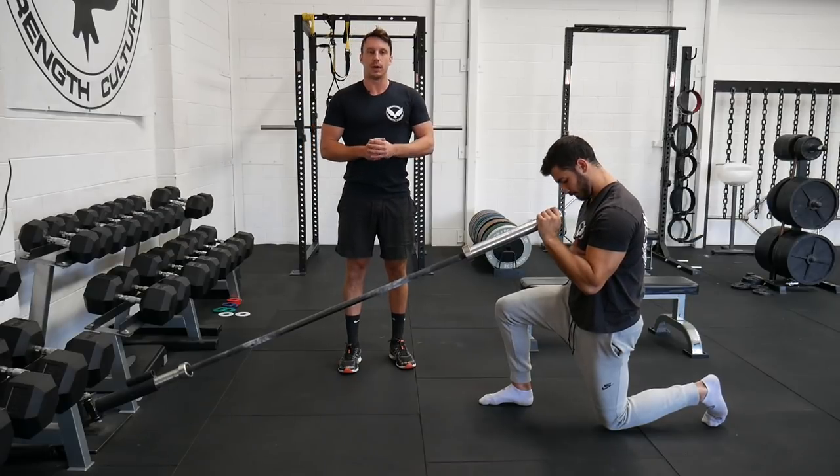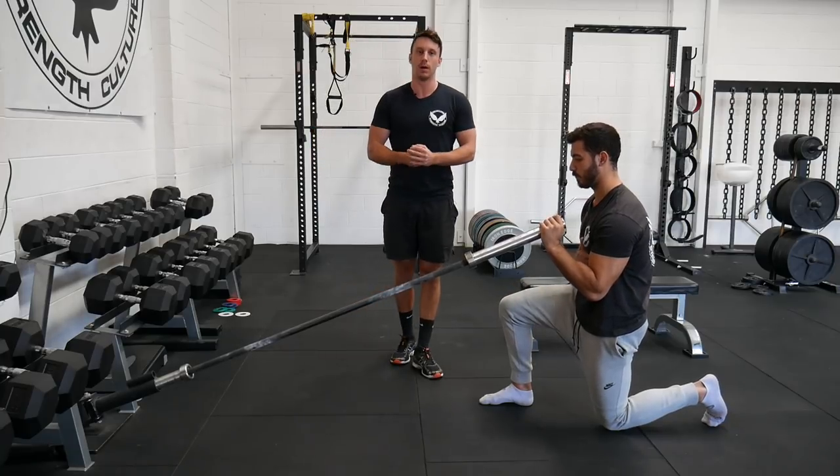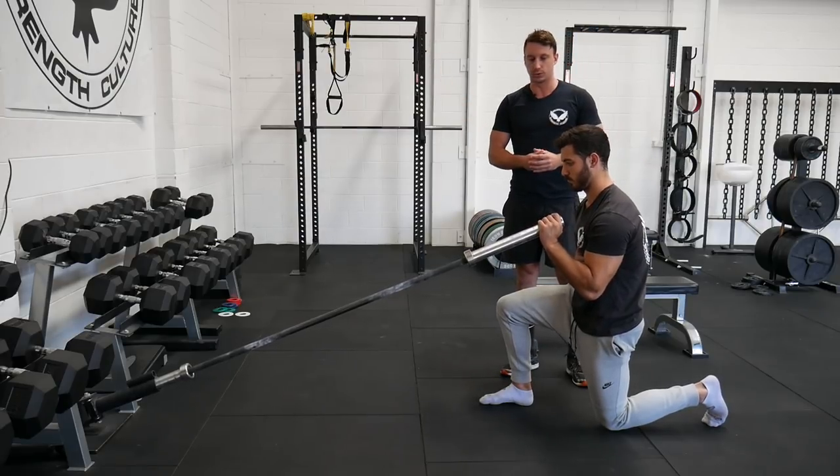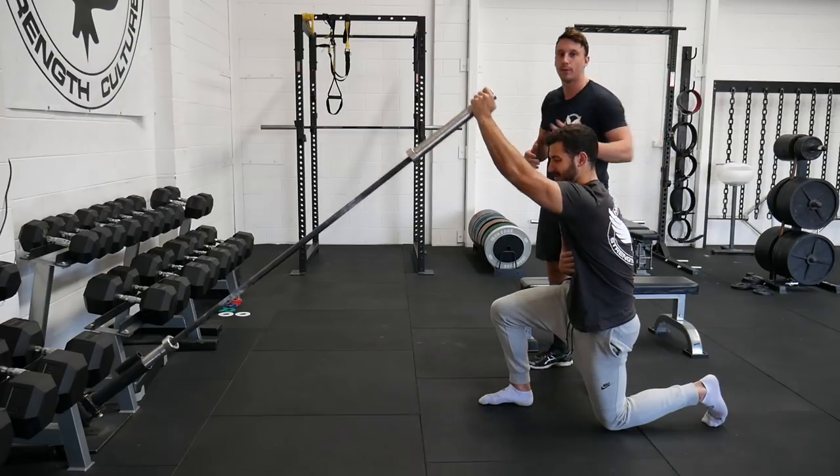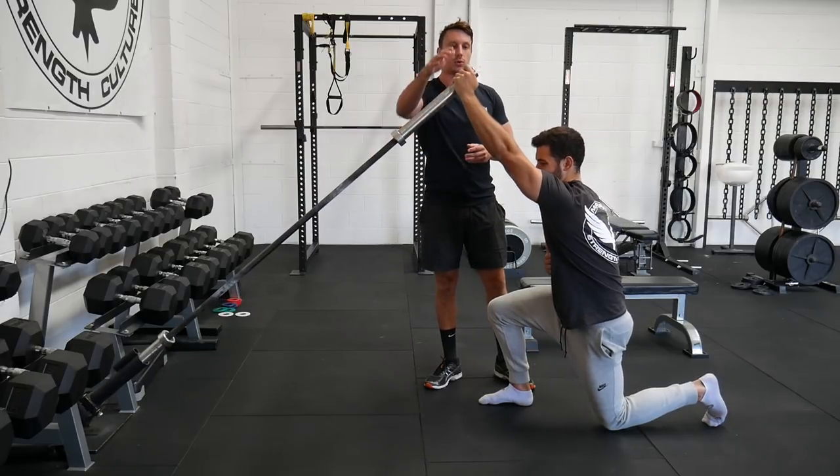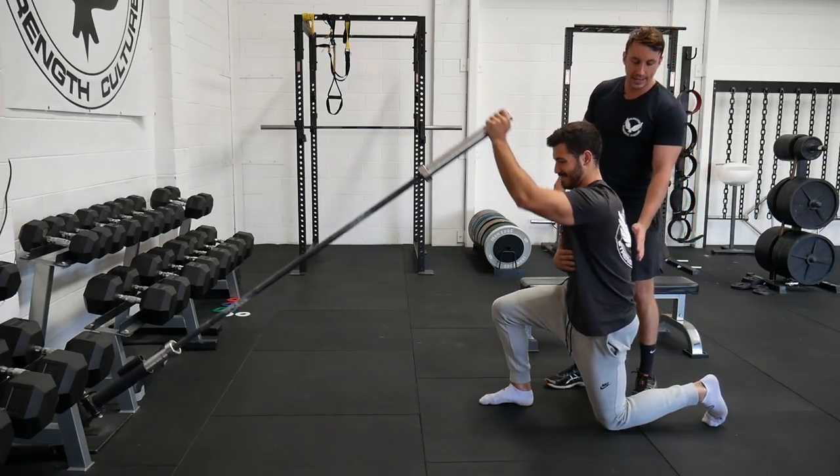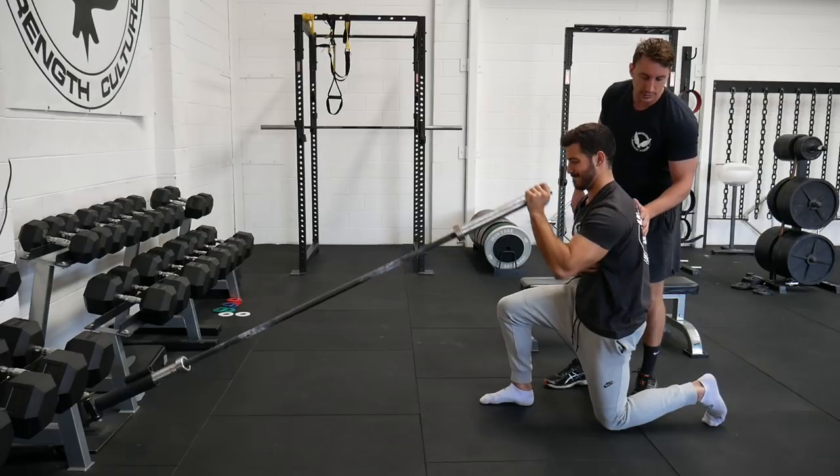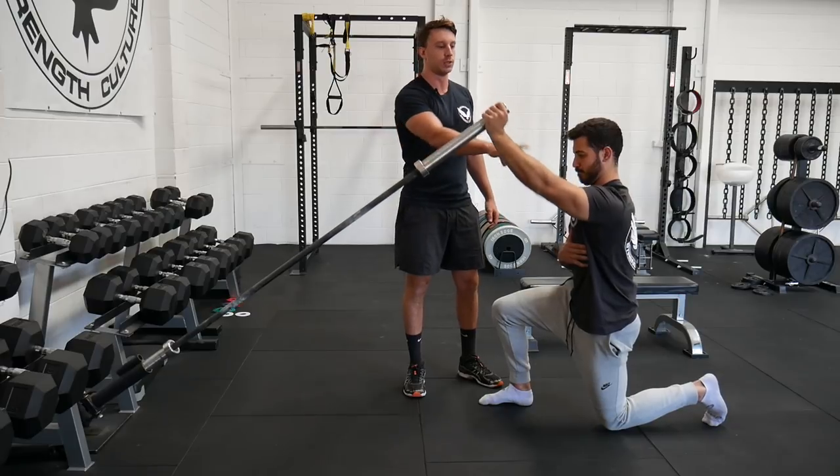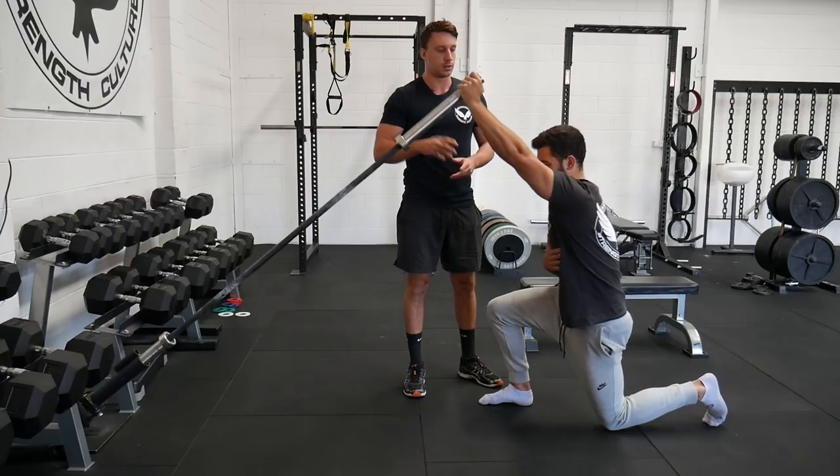So the second reaching movement that we utilize here a lot at Melbourne Strength Culture is the half kneeling landmine press. For this position we're going to set up in a normal landmine press and to get the full benefits of a reach, when Charlie goes up to push through the landmine press, he allows his shoulder blade to wrap around his body. So for this we like to cue reaching the hand up towards the ceiling, all the way up to a full reach. So we can see that when Charlie does that he comes forward into a little bit of a lean, he gets his thoracic flexion and that shoulder blade wraps around his body. What we're not looking for here is to just finish the movement once you lock the elbow. All the way up into a full reach.